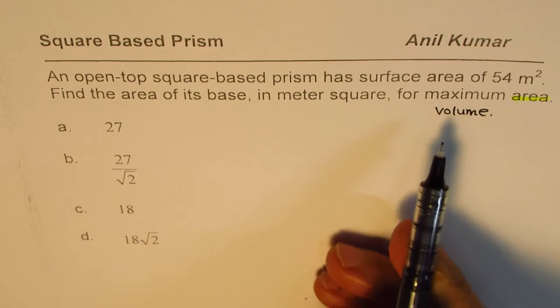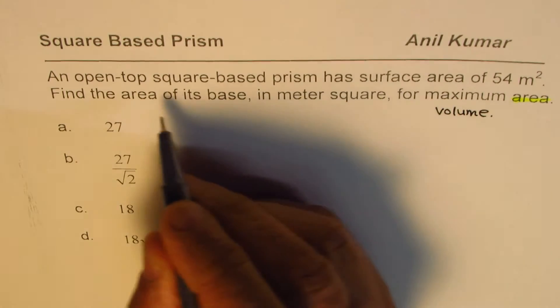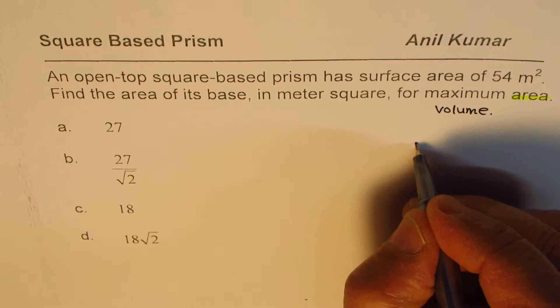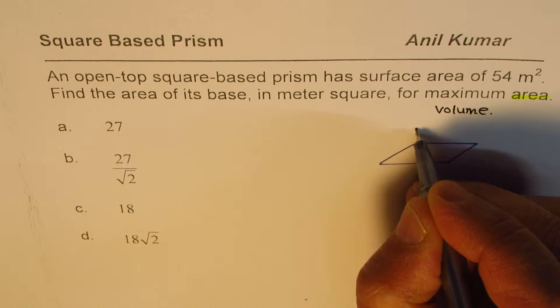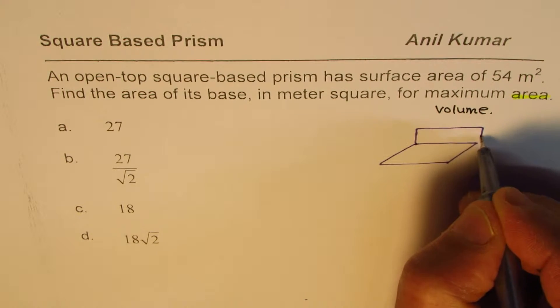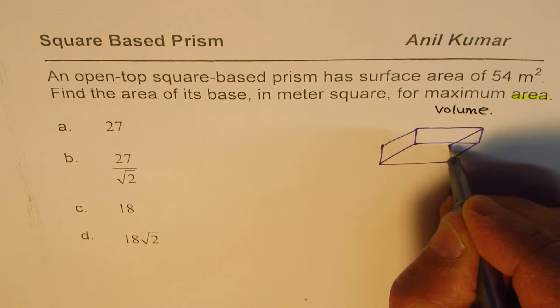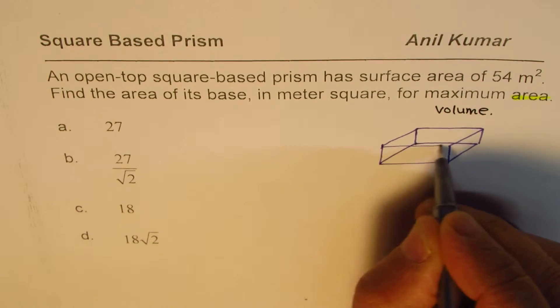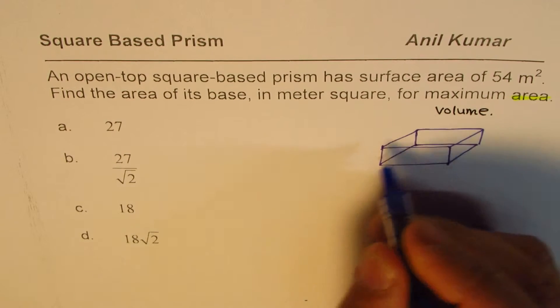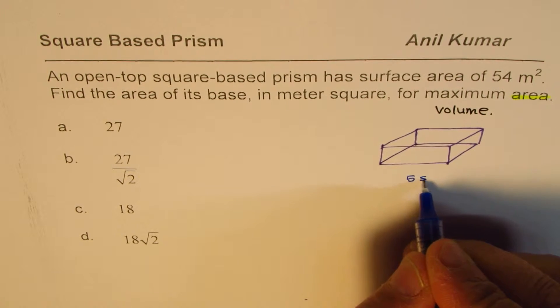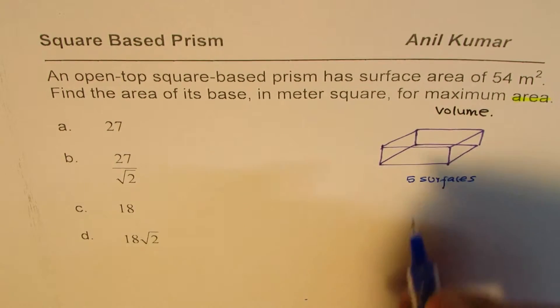What is given is fixed surface area and we are now looking into a square-based prism. That means I can make a square in the base—a square-based prism whose volume should be maximum. And this one has an open top, so basically we have five surfaces of this square-based prism.